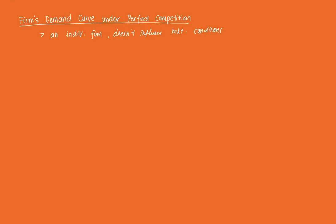An individual firm's demand function reflects its assumption that the firm can sell everything it wants at a going market price. Firms are also price takers — they cannot set the price; they just take the price as given. With that going market price, the firm can try to sell all that it can, but it has to sell at that price. There's no incentive to deviate from that price. Hence, for a single firm, the demand curve is horizontal and pegged at the going market price.